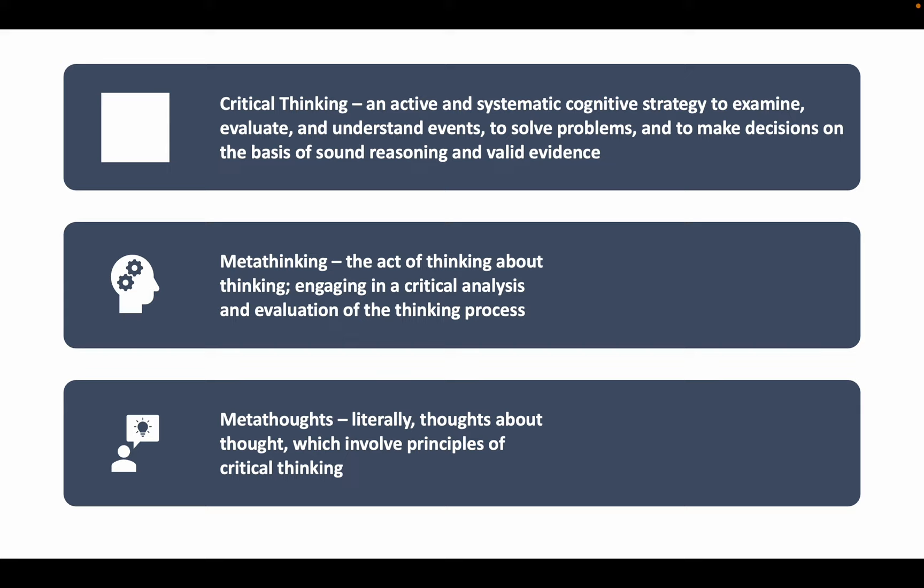Welcome to Chapter 2, Critical Thinking in Cross-Cultural Psychology. The theme of this chapter is to express the purpose of how to improve your thinking skills, to teach you to think critically, and to help you think about thinking, which is what we call meta-thinking. Critical thinking is an active and systematic cognitive strategy that we use to examine, evaluate, and understand events. We use it to solve problems and make decisions on the basis of sound reasoning and valid evidence.